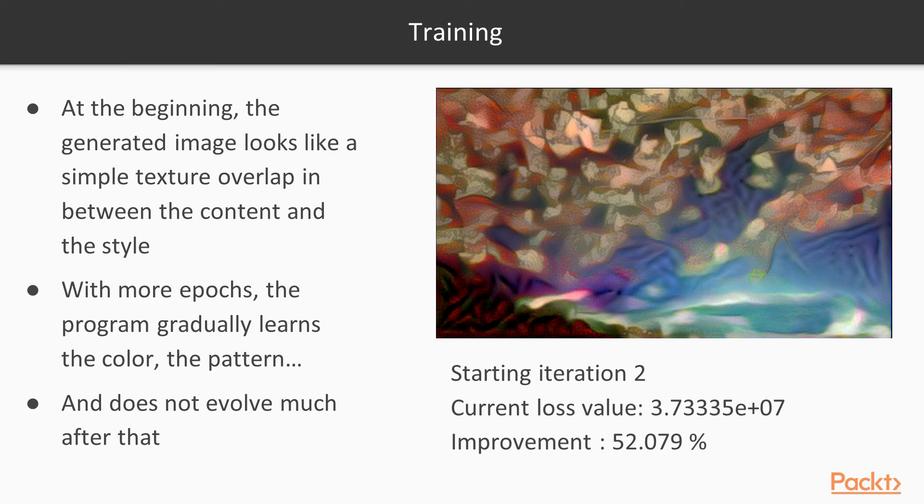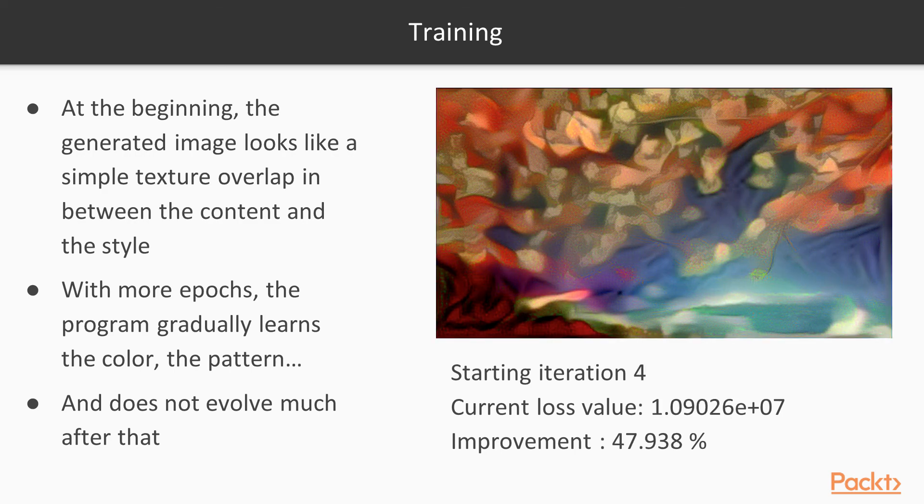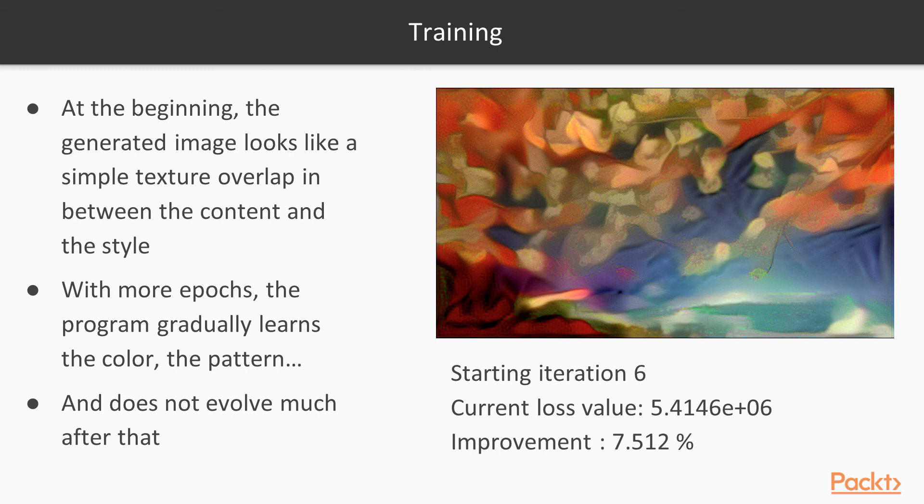And then with more epochs the program gradually learns the color and the pattern. And then after some point, see the improvement is dropping to 7%, so at some point after iteration like 10 or maybe 15, 20 or something, the improvement will be actually pretty low and it will not evolve much after that. So we have a convergence criteria and then we can stop the algorithm at this point.